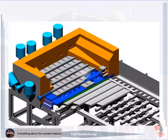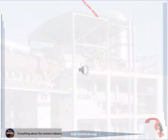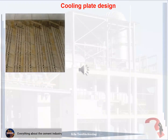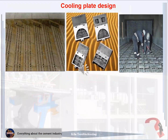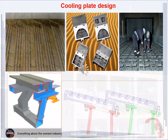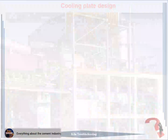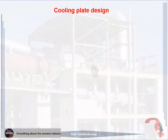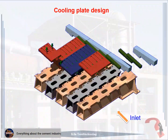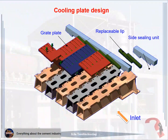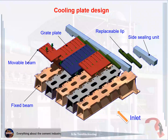This picture shows the cooling plate design. The main cooling plate for the inlet clinker cooler consists of: one, grate plate; two, replaceable lip; three, side sealing unit; four, fixed beam; five, moveable beam.